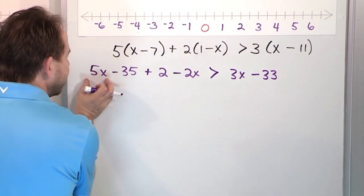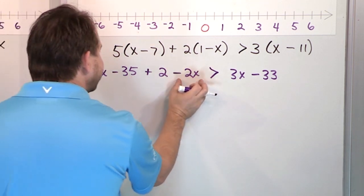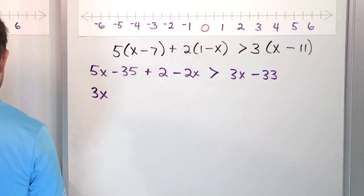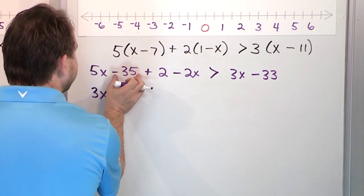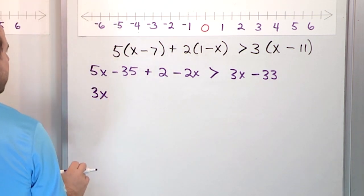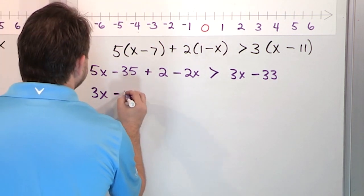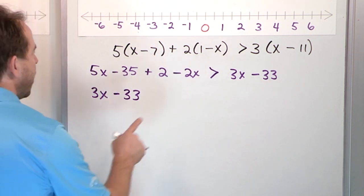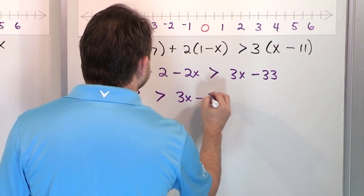Now we collect terms. On the left-hand side, we have 5x and negative 2x, so 5 minus 2 gives us positive 3x. Then for the numbers, negative 35 plus positive 2 — the same as 2 minus 35 — gives us negative 33 on the left. On the right, we have 3x minus 33.